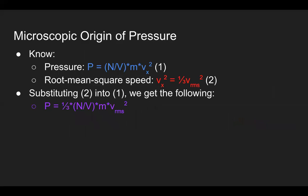Revisiting the equations for pressure and root mean square speed from the previous two slides, we can combine them again to create another equation of pressure in terms of the root mean square speed, as shown in purple.